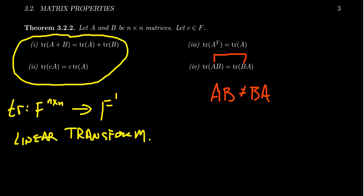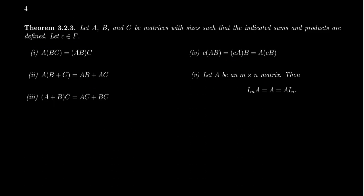Speaking of properties of matrix multiplication — there is some bad news: matrix multiplication will not commute, and we'll see counterexamples soon. But there are good algebraic properties we can count on. Matrix multiplication is associative: A times (BC) equals (AB) times C. You can multiply the first two then the last, or the last two then the first, and get the same result.